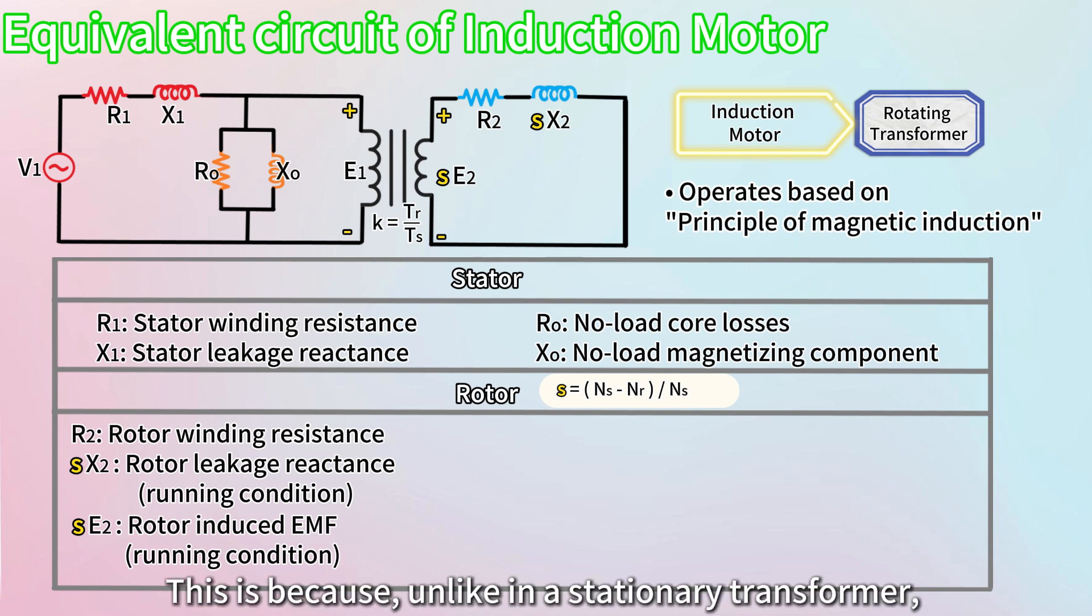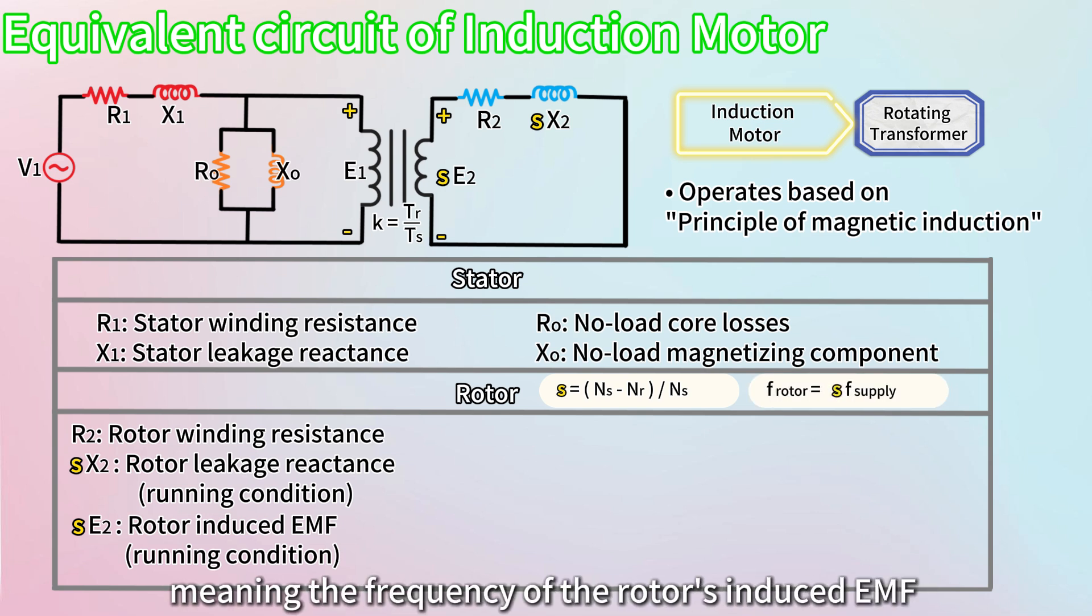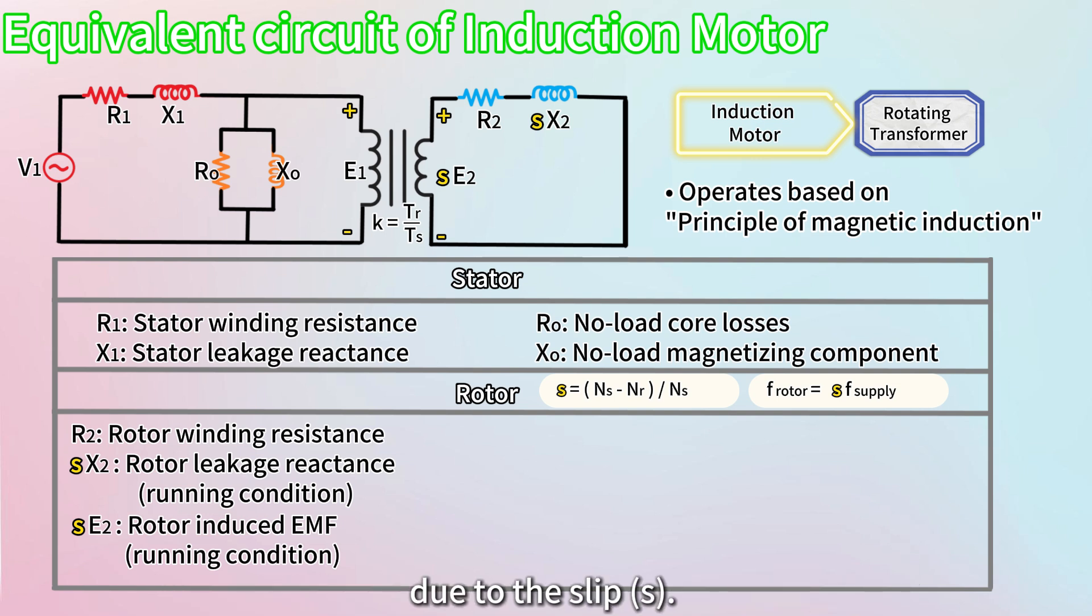This is because, unlike in a stationary transformer, the rotor in an induction motor is rotating, meaning the frequency of the rotor's induced EMF differs from that of the stator's supply due to the slip. Let's break it down with an example.